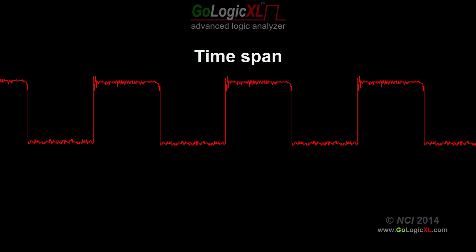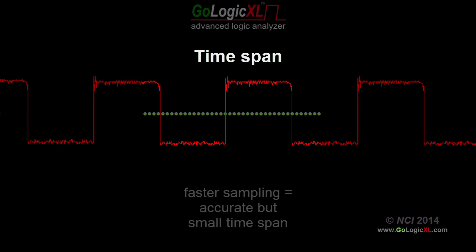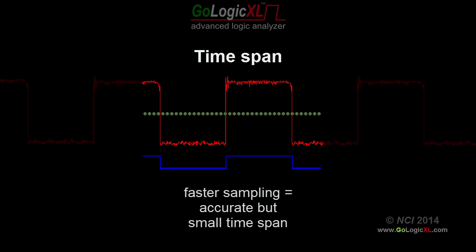Choosing the best sampling rate for normal timing mode is a tradeoff between accuracy and total time span. A fixed number of sample points are available for a trace capture. A faster sample rate more accurately represents the original input signals, but the total time span of the trace capture is reduced.